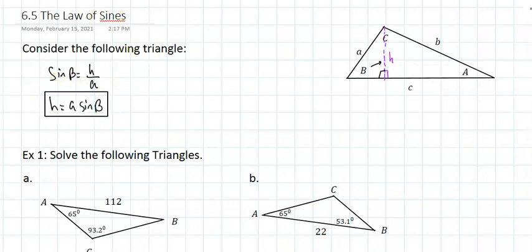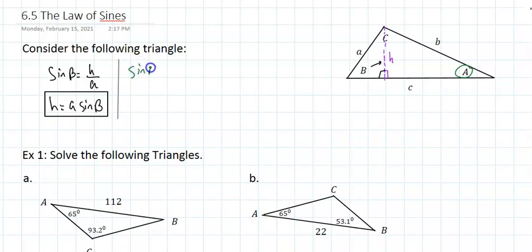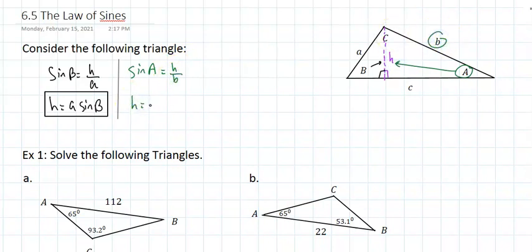Now I'm going to look at this problem from the other angle, from angle A. The sine of angle A is the opposite over the hypotenuse. And if I cross multiply, I'll get the height to be side B times the sine of A.